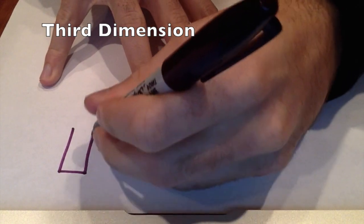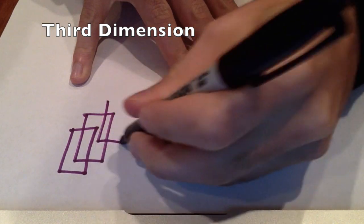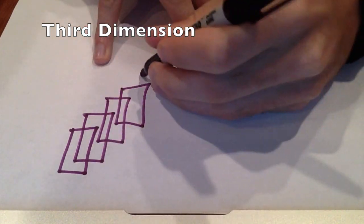When trying to understand the 3rd dimension, it's easiest if we start with the 2nd dimension, which is a simple box, and then draw an infinite number of boxes coming off of that box.